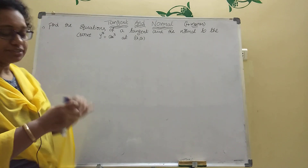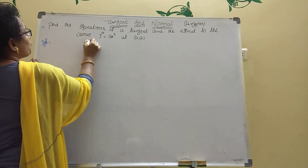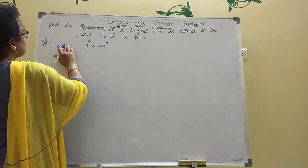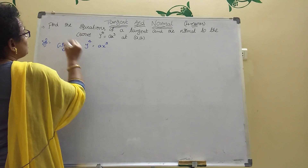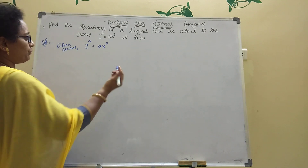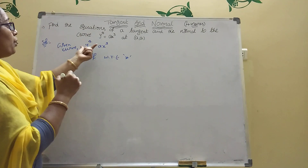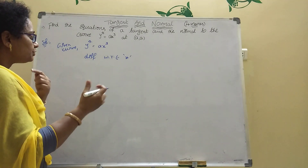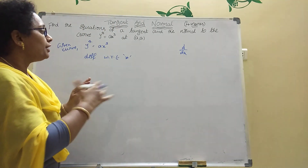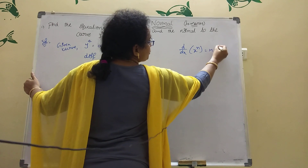The curve is given: y⁴ = ax³. Now we should do the first derivative — differentiation with respect to x. The formula is d/dx of xⁿ = n·xⁿ⁻¹. Here n is 4. Y⁴ is there, so using that formula, we apply it. Here y is a different variable from x, so dy/dx will come in.